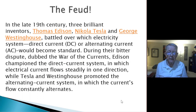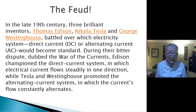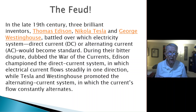In the late 19th century, three brilliant inventors — Thomas Edison, Nikola Tesla, and George Westinghouse — battled over which electricity system, direct current DC or alternating current AC, would become standard for power transmission and use in the home.